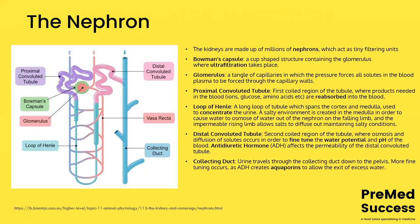A fun fact for A-level: sometimes they ask about adaptations in other animals. Desert animals like desert rats need to conserve water, so they have longer loops of Henle than humans. The longer the loop of Henle, the more concentrated the urine can become, because it sets up a stronger concentration gradient. So if an exam question asks how a desert animal is adapted to retain water, a longer loop of Henle is the key answer.